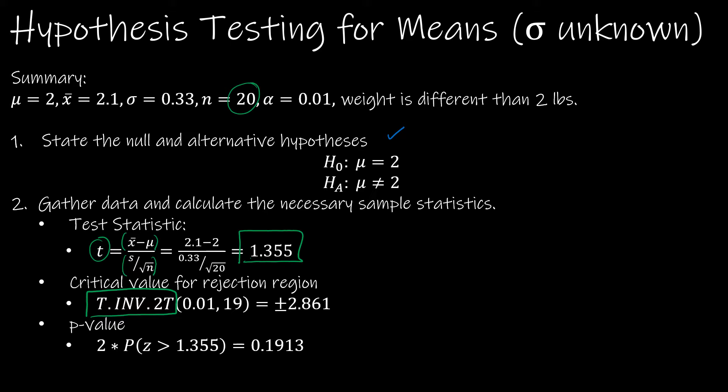And then since n is 20, the degrees of freedom is 19, so one less than 20. And we end up with positive and negative 2.861.